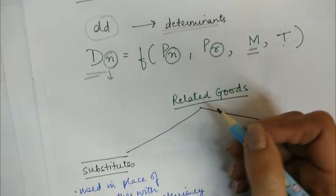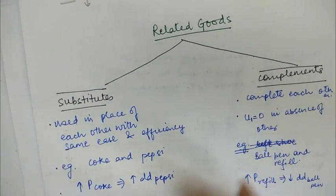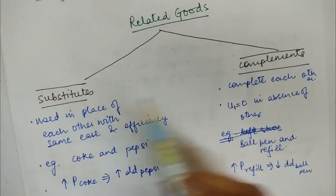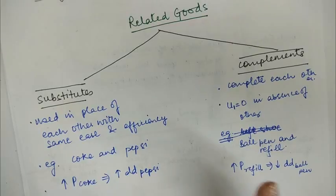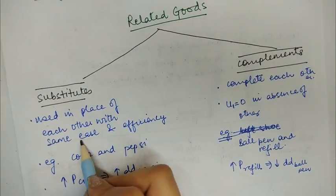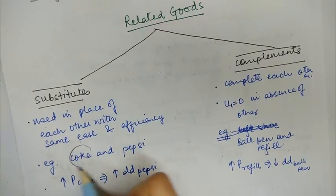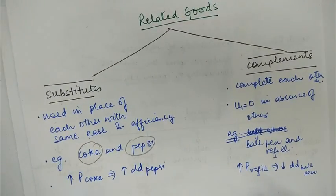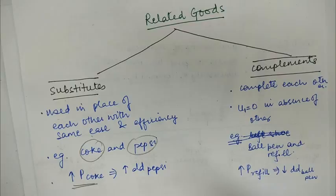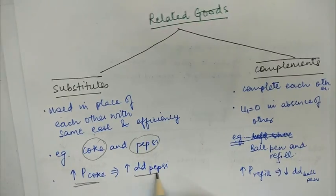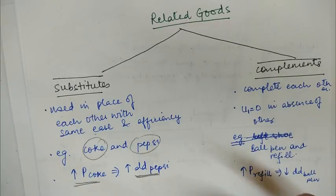There are two kinds of related goods: substitute goods and complement goods. Substitute goods are goods that can be used in place of each other — for example, Coke and Pepsi. If a consumer is indifferent between them, an increase in the price of Coke (with Pepsi's price constant) will increase the demand for Pepsi, since Pepsi has now become relatively cheaper.